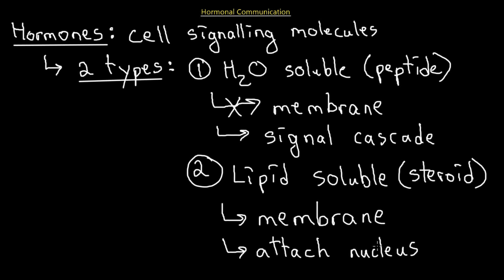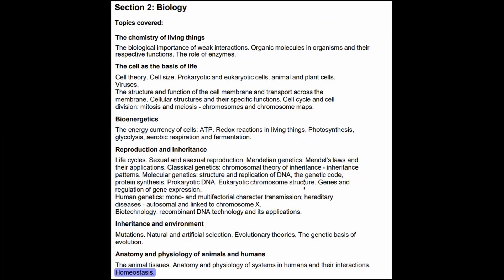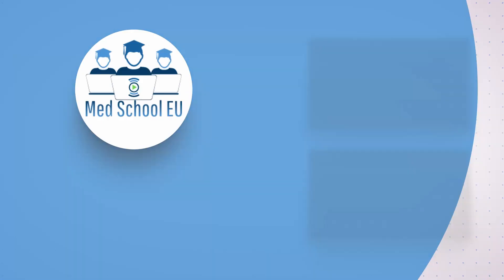That is the gist of dividing hormones into several types. Finally, I want to show the chart of the endocrine system — all the hormones involved, their types, and the actions they produce. I suggest you know the action of these hormones and how they typically work. This chart is for you to use to memorize these things. This concludes today's lecture, and in the next one we will take a look at the homeostasis of the menstrual cycle.